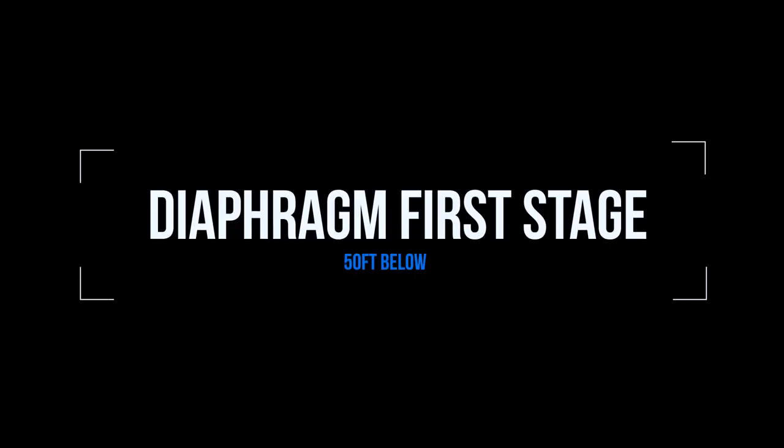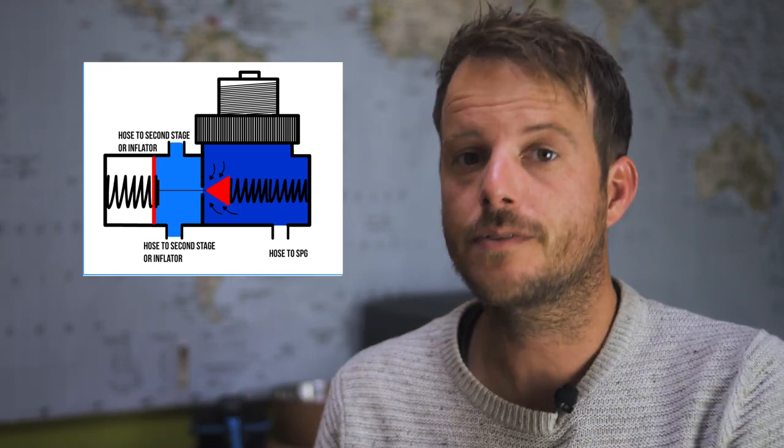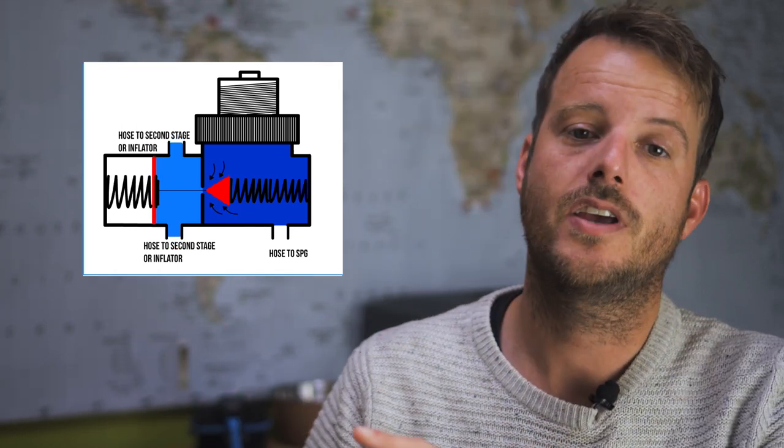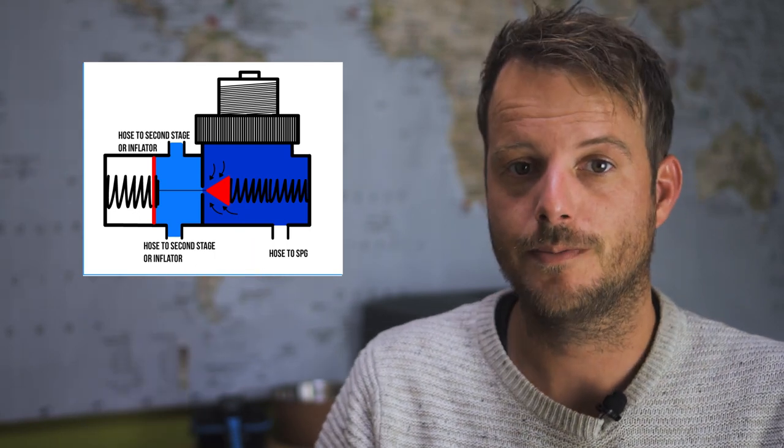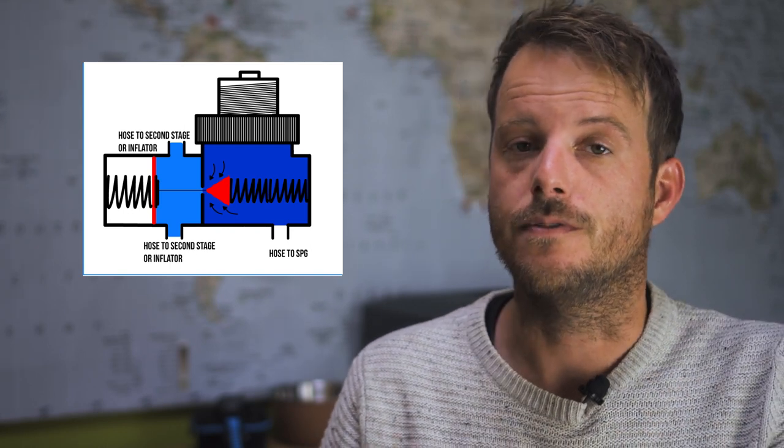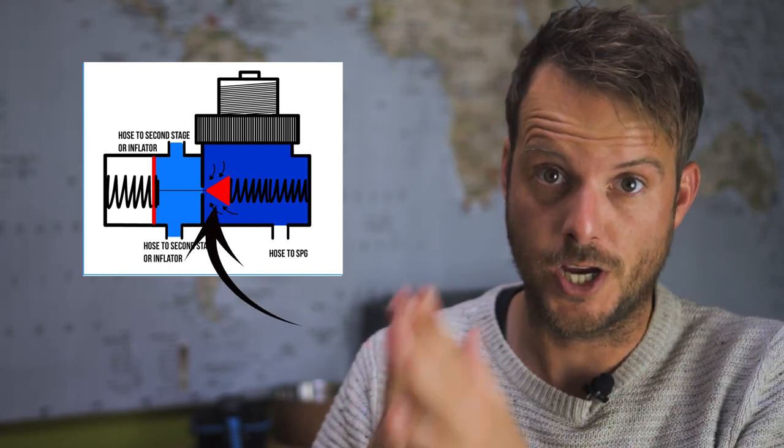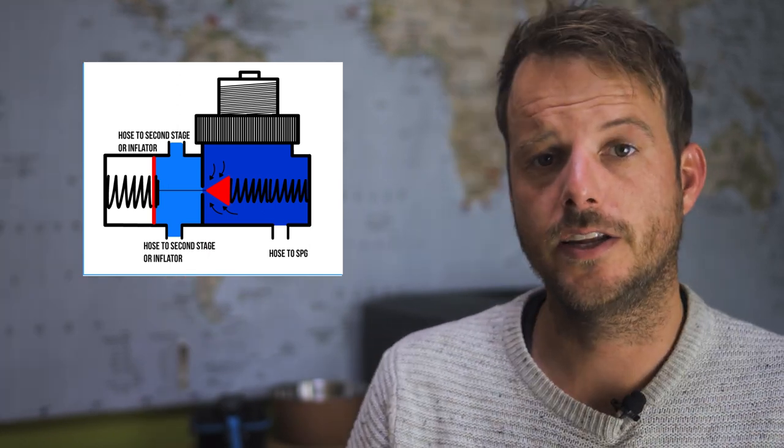Next is a diaphragm first stage which looks a bit different. Much like with a piston first stage, where we connect the diaphragm first stage air flows from the tank into the high pressure chamber which is nice and blue here. Unlike the piston first stage there's no rod in it, there's a valve which is conically shaped which is the red thing here and it has a needle on it. The needle is connected to a membrane which divides the next compartment into two different chambers.